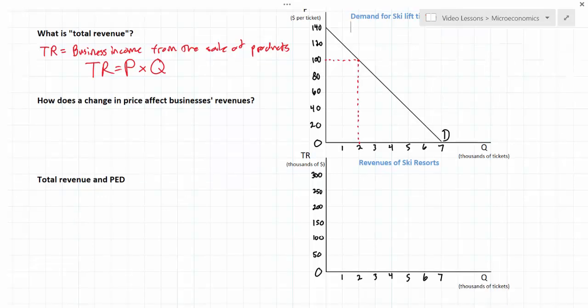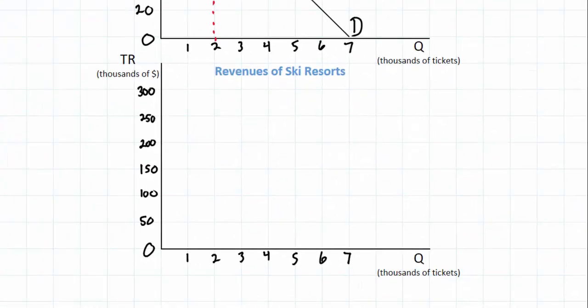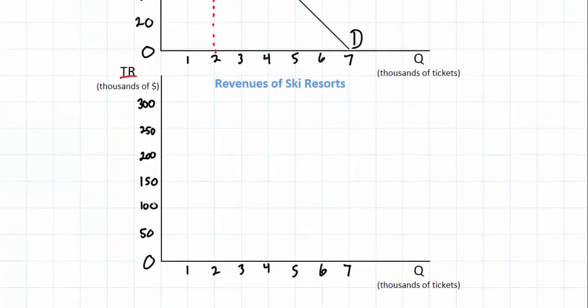Notice the values on the graph on the bottom. On the vertical axis we're going to be plotting the total revenues of ski resorts at each of the quantities along the horizontal axis. So the Q axis is the same as it is for our demand curve. We go from zero lift tickets to 7,000 lift tickets. What I need to do now is determine the revenues earned by ski resorts at each of the prices along our demand curve in the top.